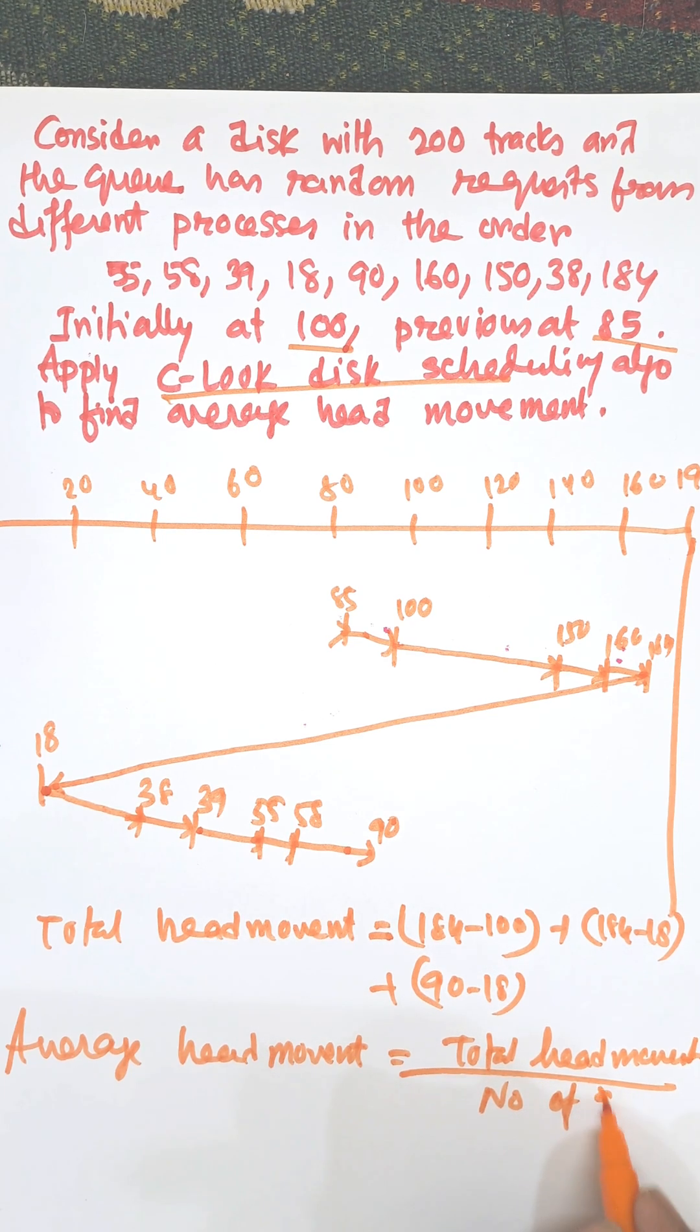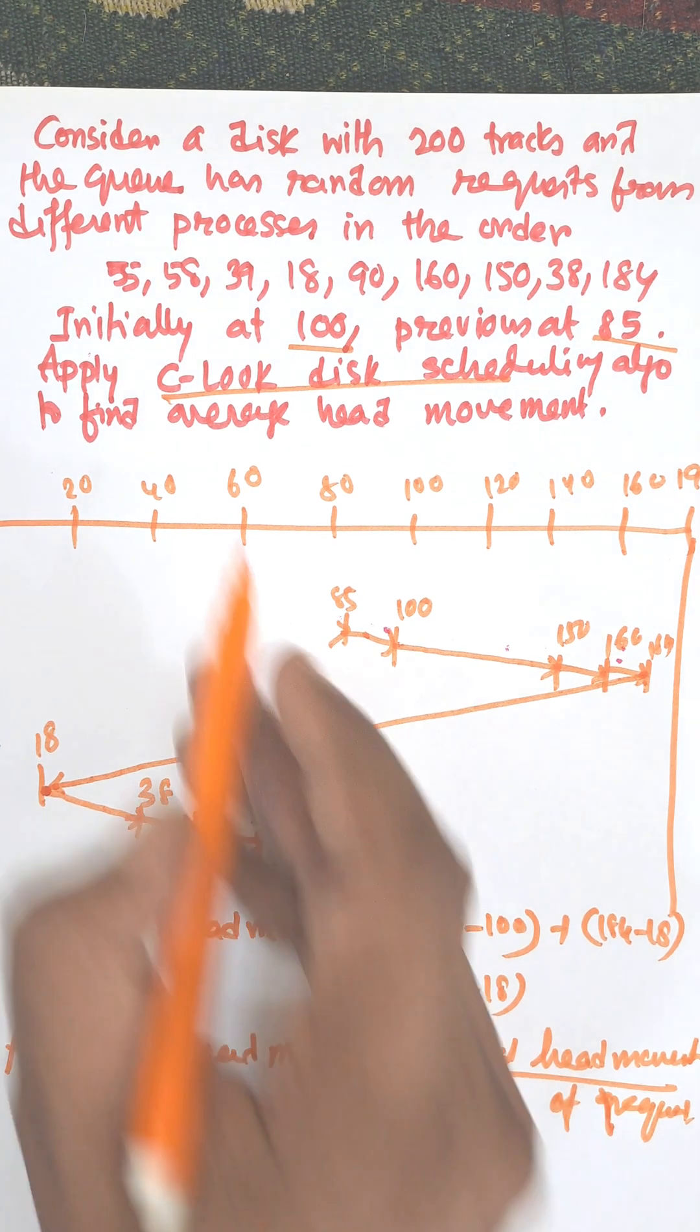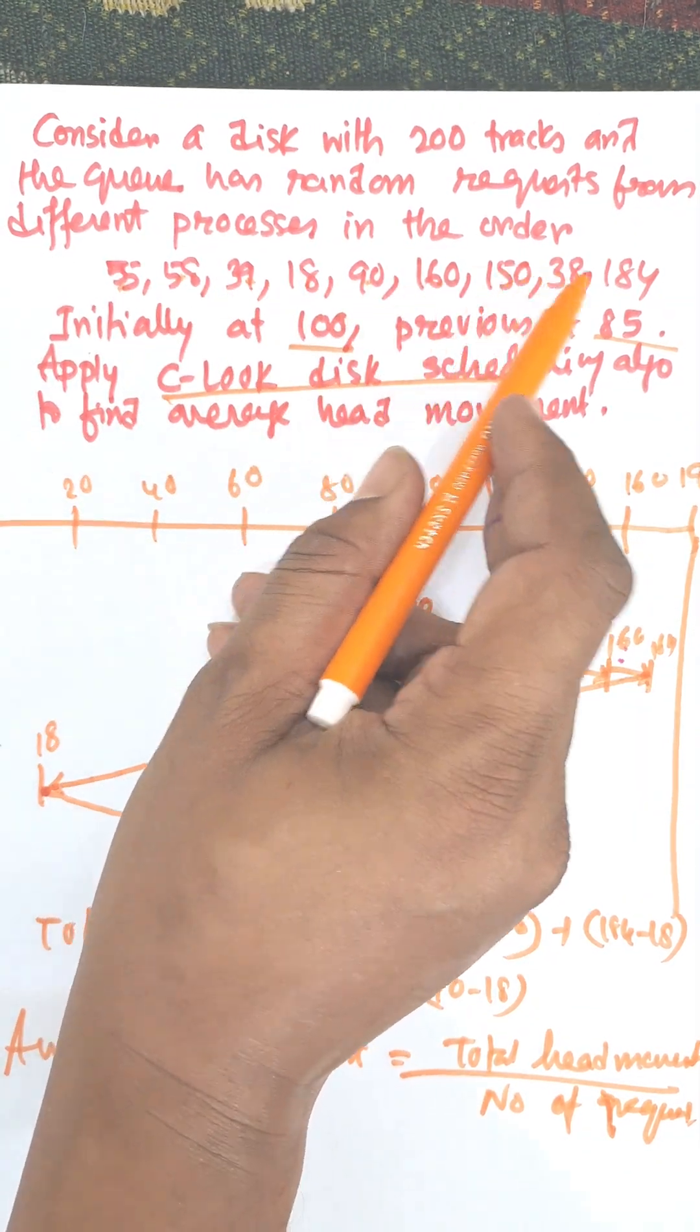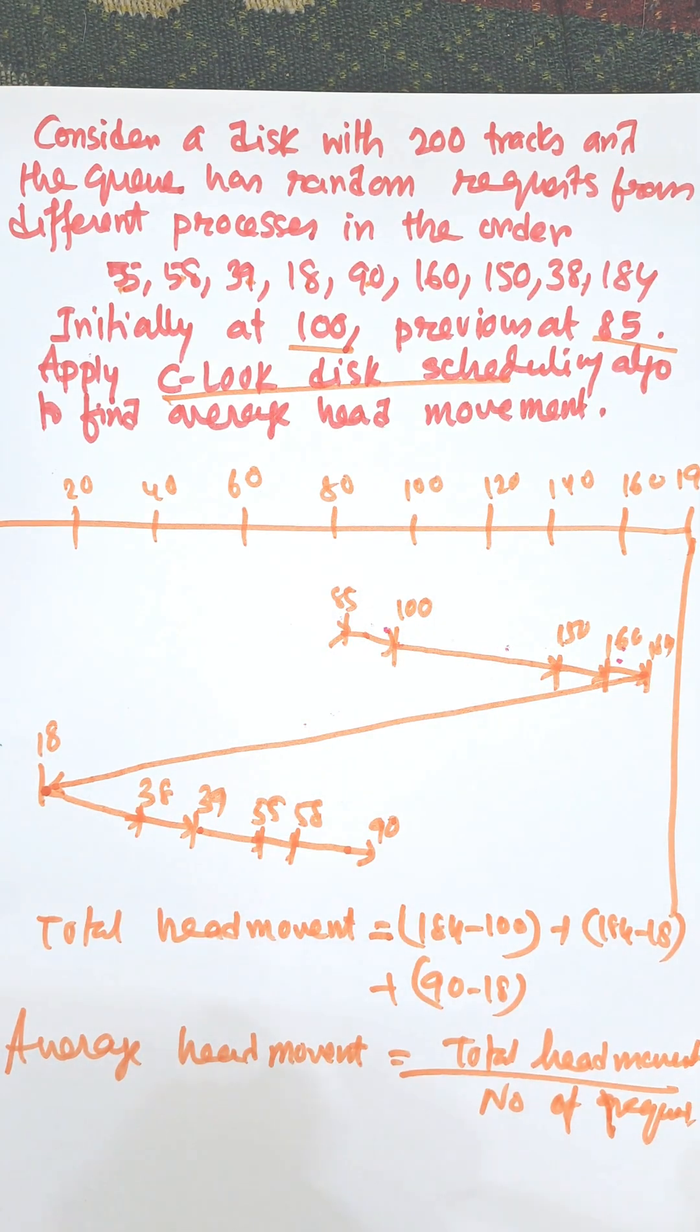Number of requests: 1, 2, 3, 4, 5, 6, 7, 8, 9. Total head movement divided by 9.